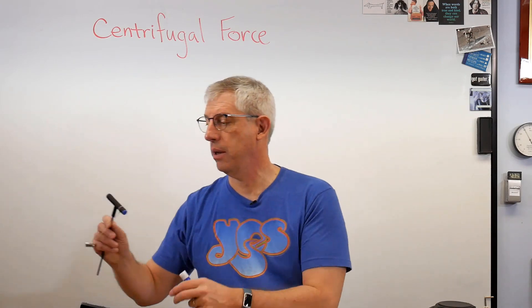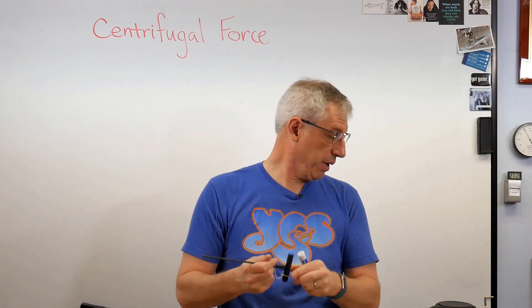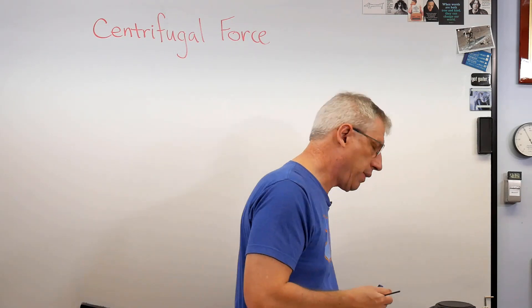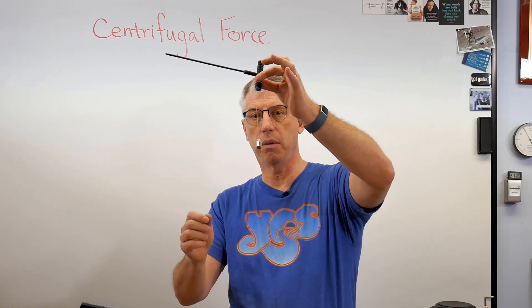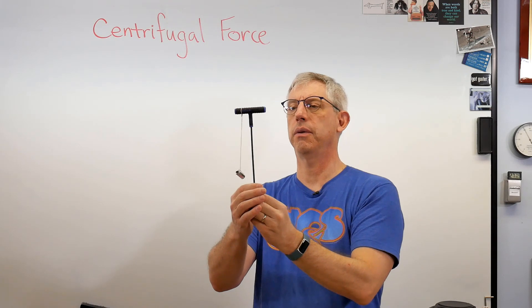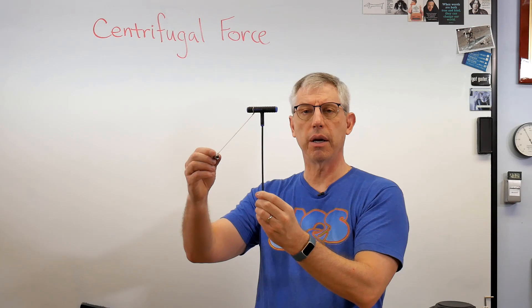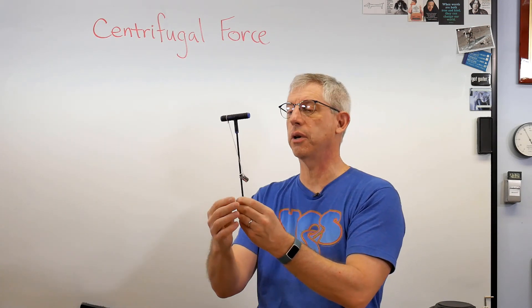I took this T-handled wrench here and I hung a little string off it with a socket, a little mass there. So if I hold the wrench vertical like this and I start spinning it, this socket ought to start swinging out like that, right, because of centrifugal force.